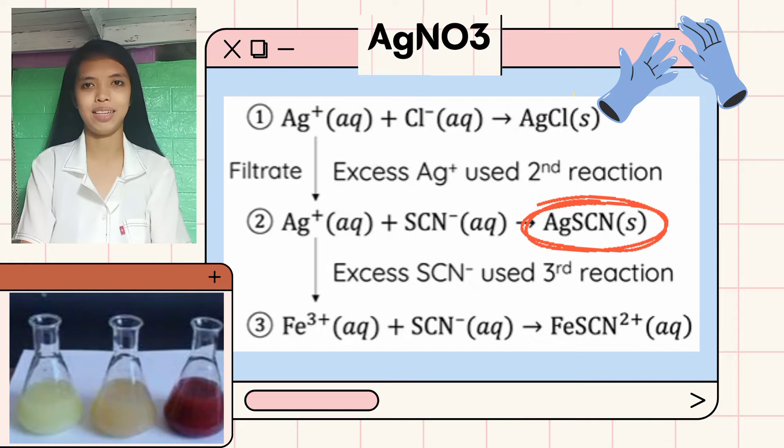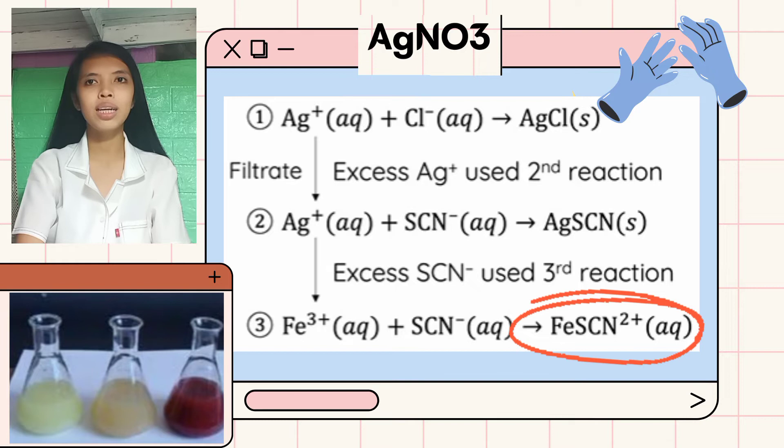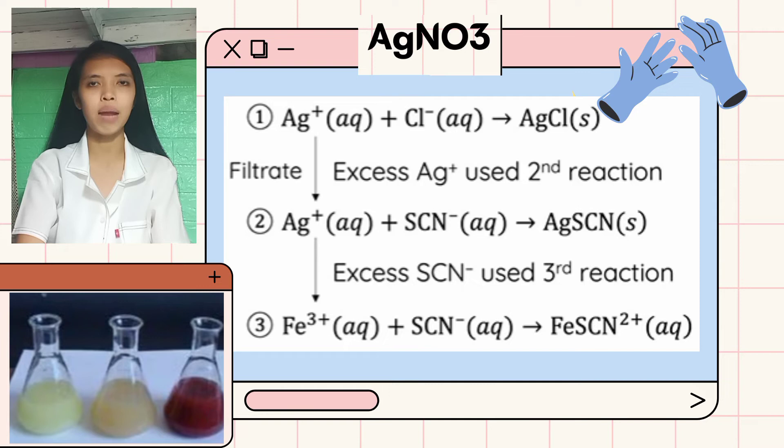Now, when all excess silver ions have precipitated in this reaction, the excess thiocyanate ions will then react with the ferric iron present in the conical flask. This will form a metacomplex with a distinct brick red color — iron thiocyanate — as seen in the third picture. The formation of this brick red color marks the endpoint of Volhard's method.